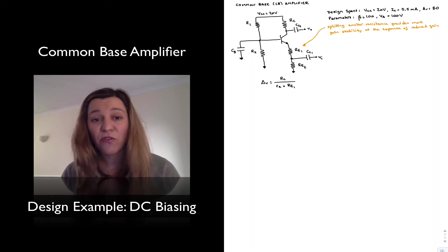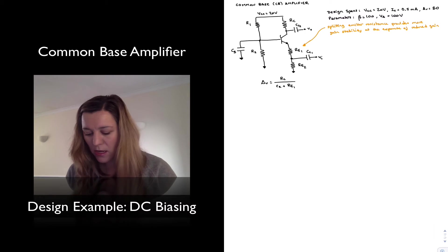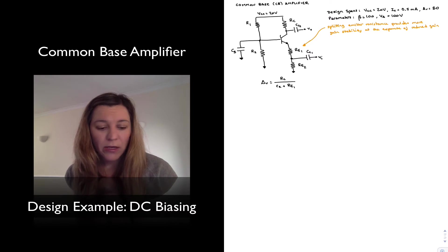Now, why does it provide more gain stability? Well, that's simple to see. In our original expression, where we didn't have RE1 and all the emitter resistance was just lumped, our expression for voltage gain was RC divided by little RE. Now, remember that little RE is equal to the thermal voltage divided by the quiescent collector current.